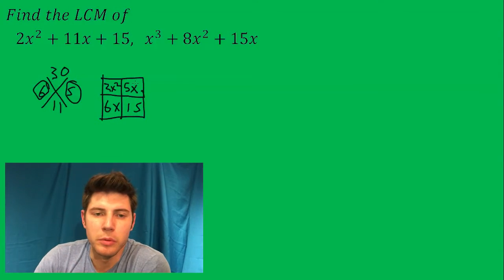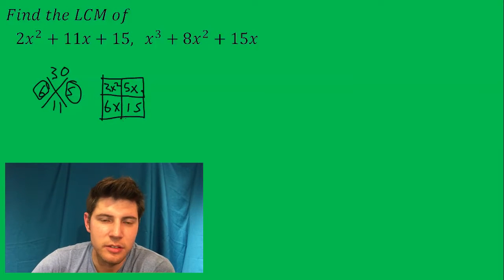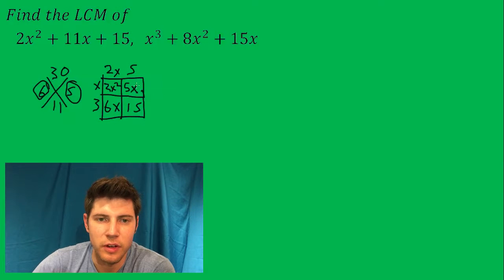Now we just find out what we would multiply by to get these inside. 2x times x gives us 2x squared, and then 2x times what? 3 gives us 6x, and x times what? 5 gives us 5x. So now this one factored is 2x plus 5 times x plus 3.